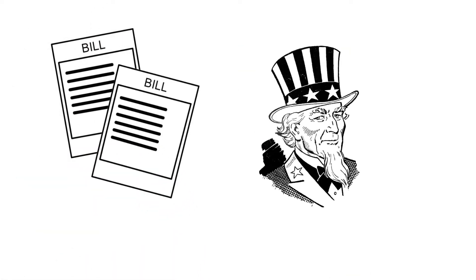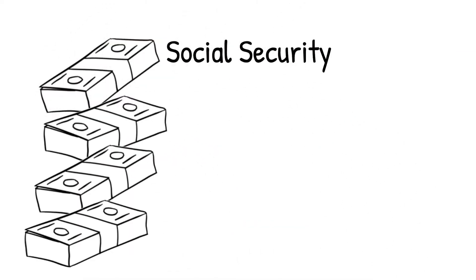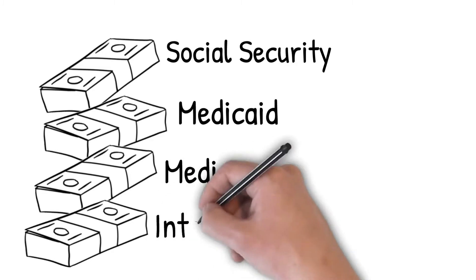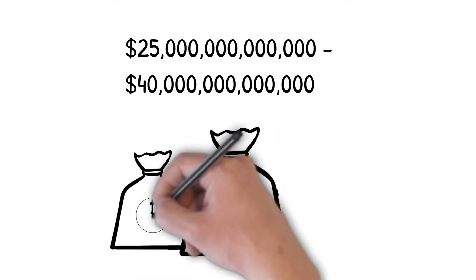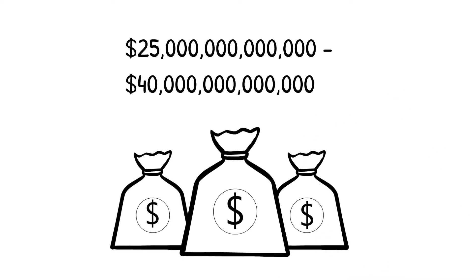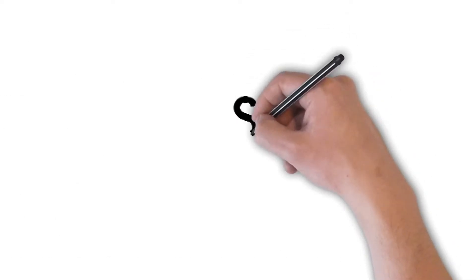What are the bills owed by Uncle Sam? They stack up like this: Social Security, Medicaid, Medicare, and interest on the national debt, which is estimated to be $25 to $40 trillion, and that's before the recent stimulus package.